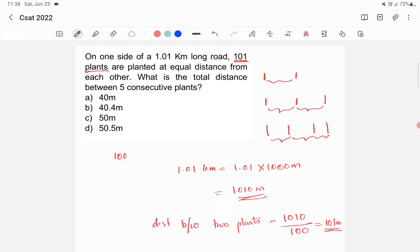As I already mentioned, if we have five plants, we have four distances between them. So the answer is 4 times 10.1, which is 40.4. The answer is option B, 40.4 meters.